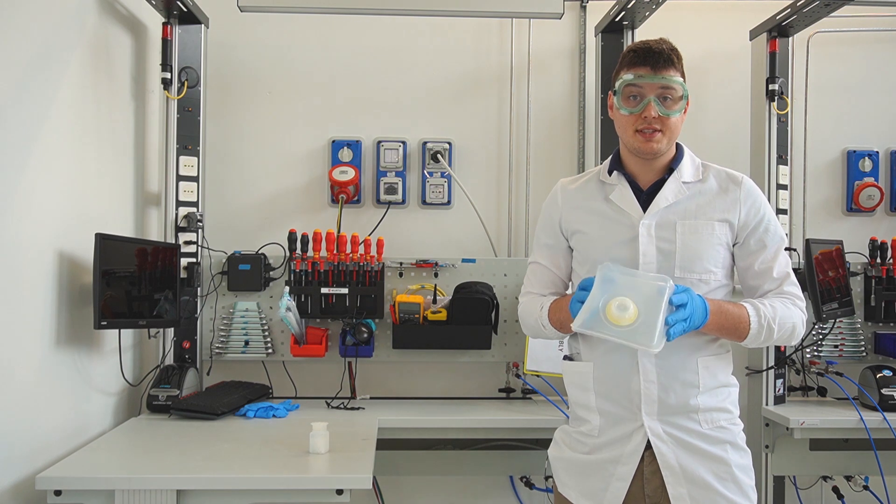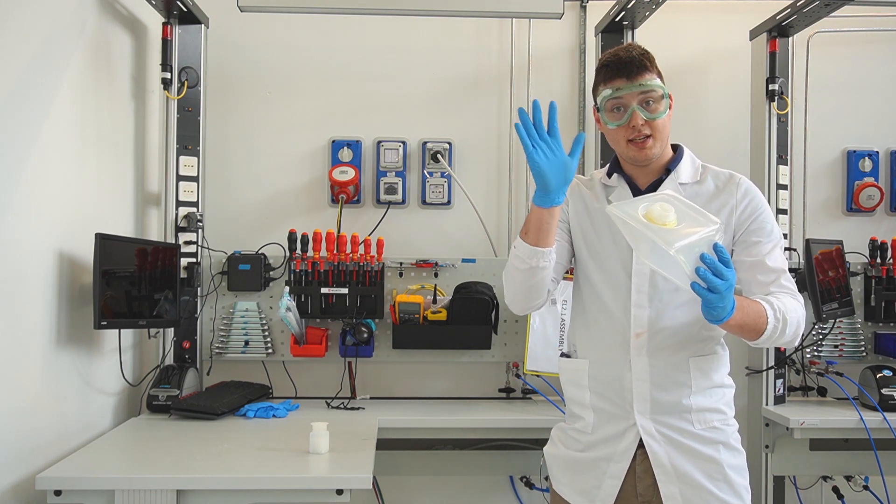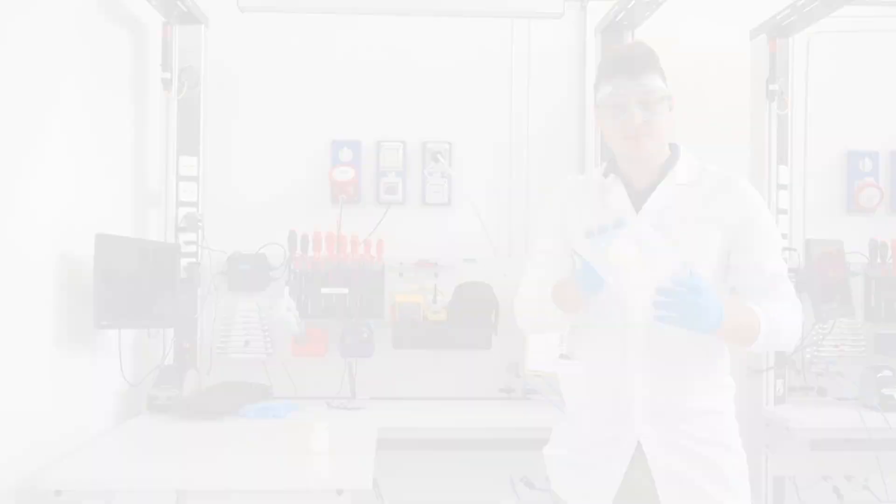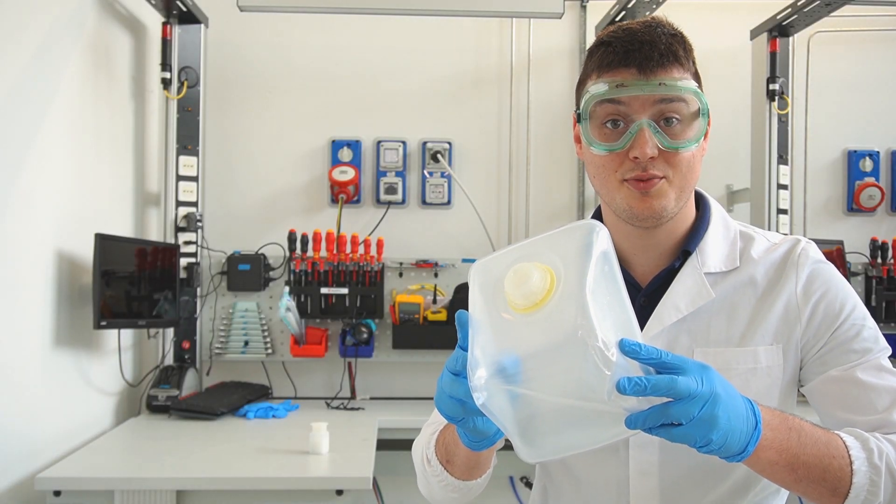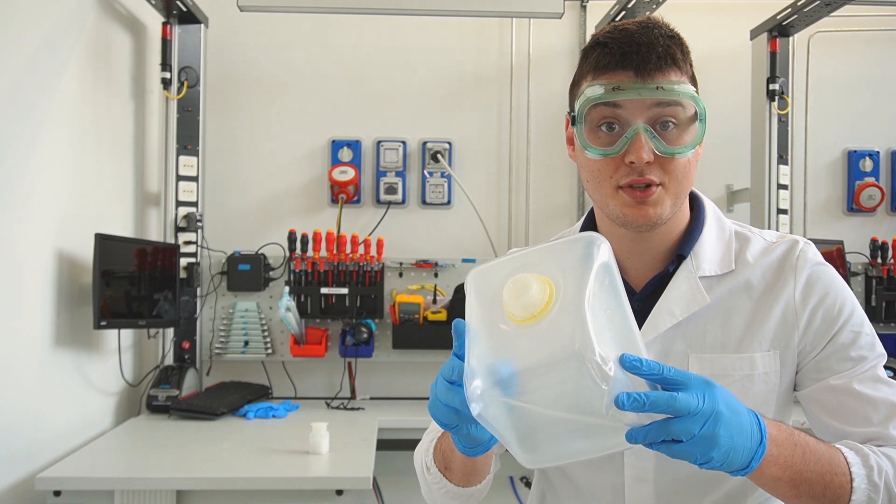Since we are preparing 3.6 liters of the electrolyte solution we will first fill 3.6 liters into the now empty electrolyte bag. Make sure to use a water source compliant to the electrolyzer water input specification. In this case less than 20 microsiemens per centimeter.